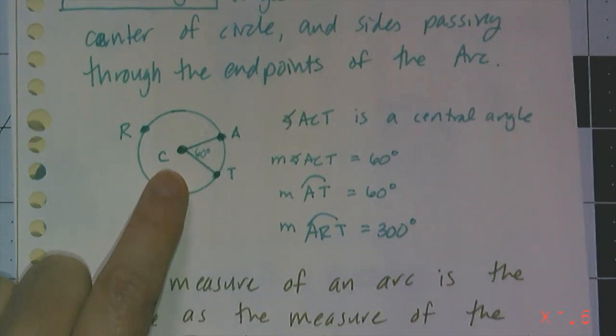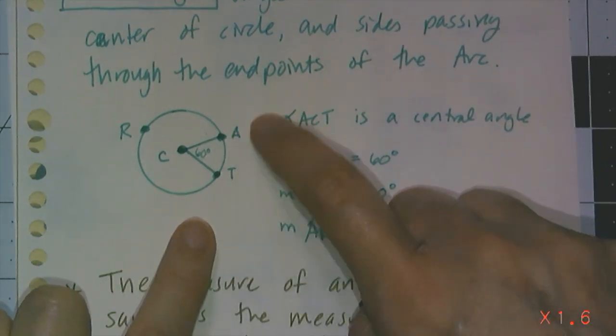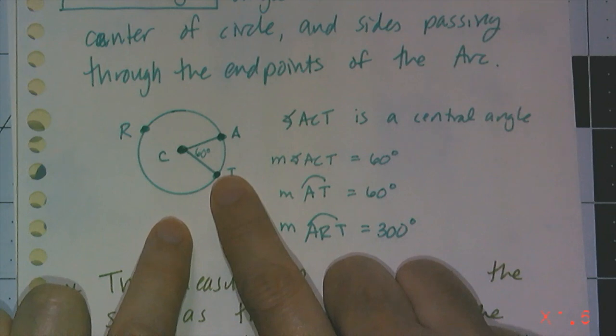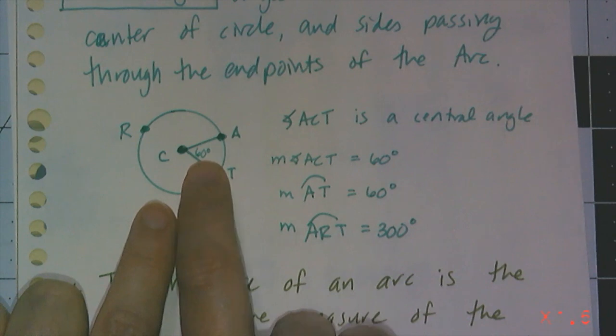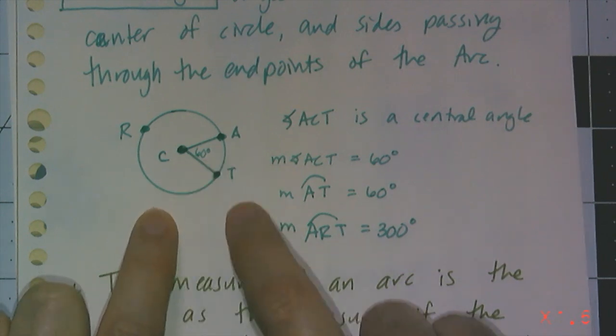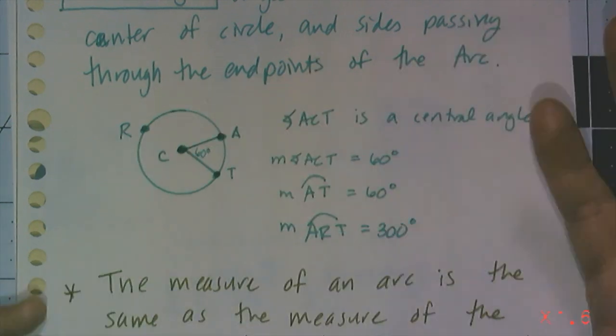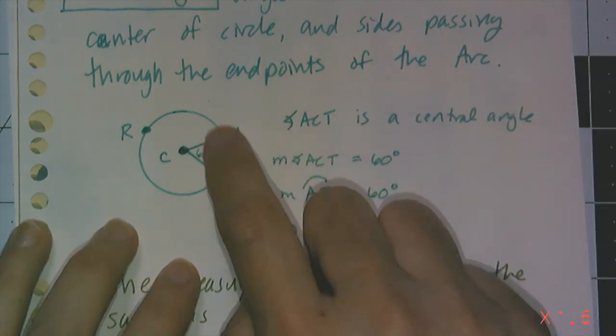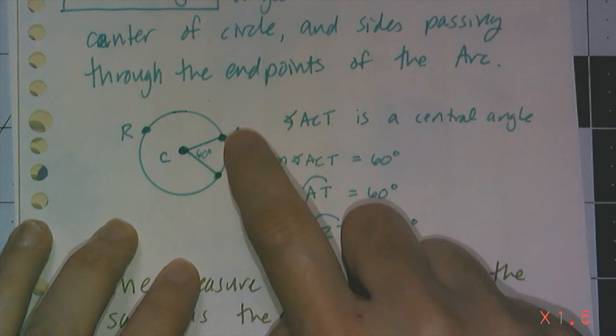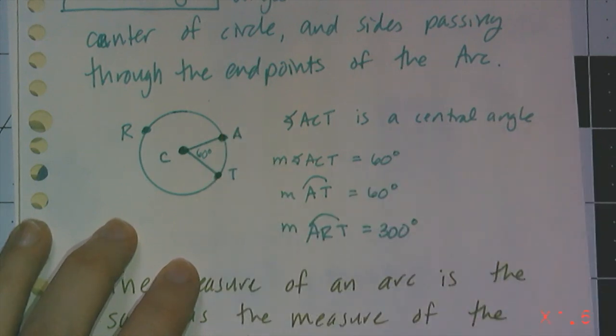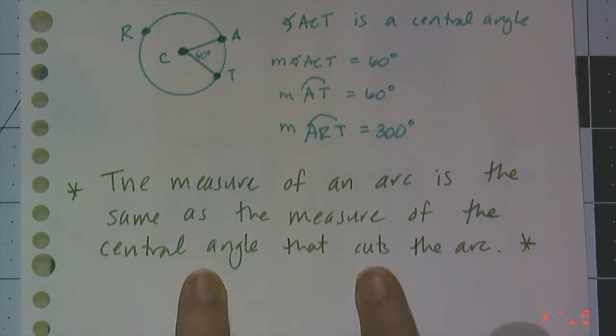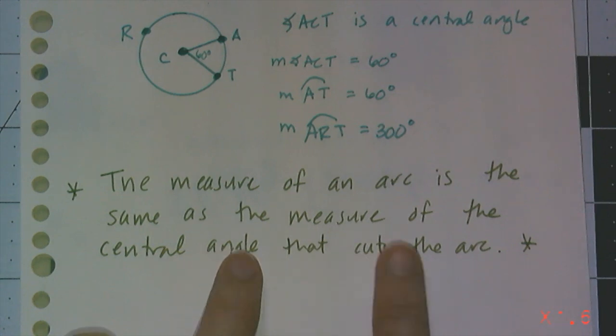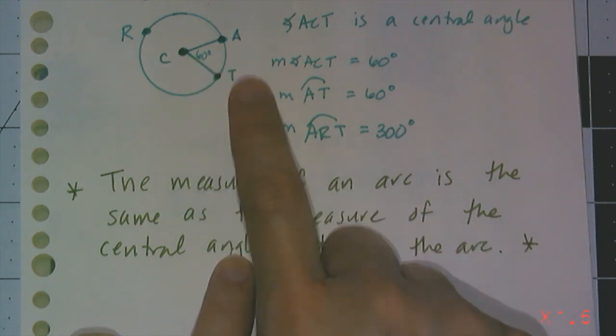And of course, the major arc ART also has a measure, and its measure is the reflex of 60, which would be 300 degrees, because I have to have 360 degrees to go full circle. So the measure of ART is 300, and the measure of arc AT is 60. So remember, the measure of the arc is the same as the measure of the central angle that cuts the arc.